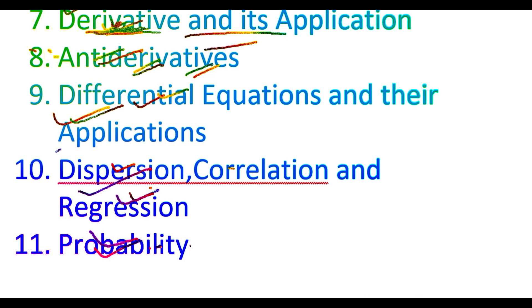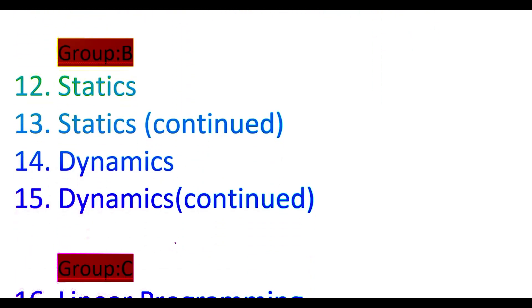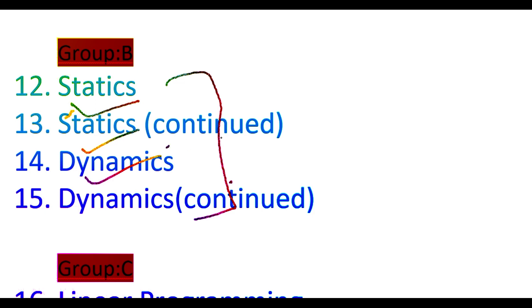The eleventh topic is probability — random experiments and probability, determining the probability of getting an event, empirical probability, classical meaning of probability, mutually exclusive events, non-mutually exclusive events, and conditional probability. Group B has four topics: statics, statistics, and dynamics, which are related to physics.